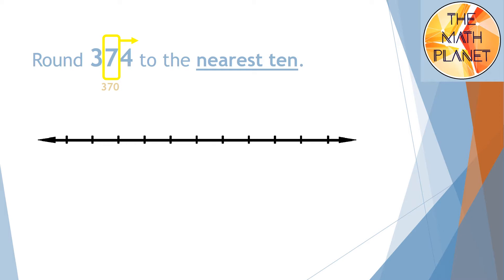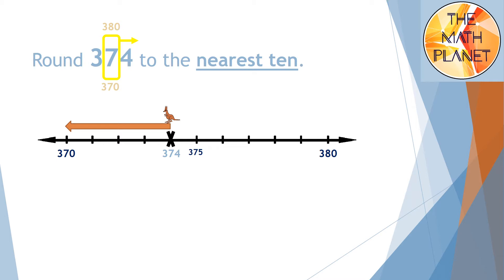The upper benchmark will be 10 more because I'm rounding to the nearest 10, so it will be 380. I will locate 370 and 380, the lower and upper benchmarks, on the number line. Next, I will add the halfway number, which is 375. Then I will put my number, 374, on the number line and round it. In this case, I will round it to 370 because 374 is closer to 370. The answer is 370, and in this example we rounded down to the lesser number.